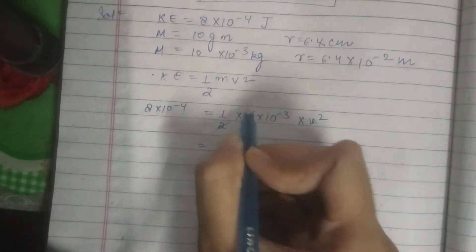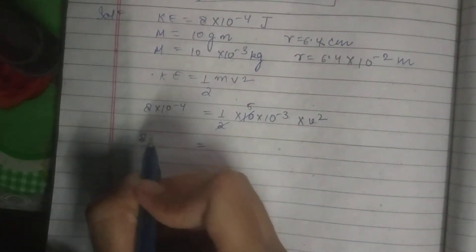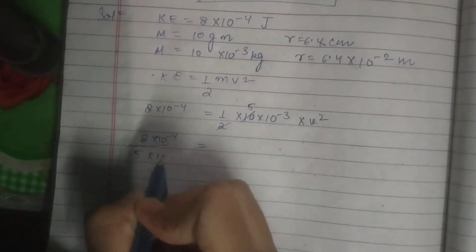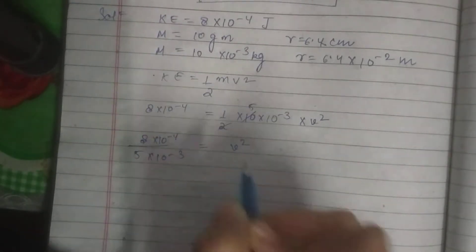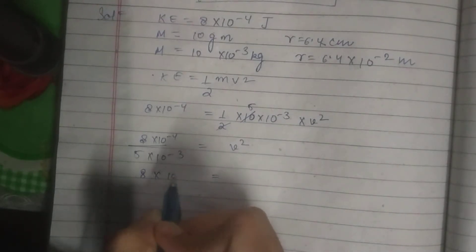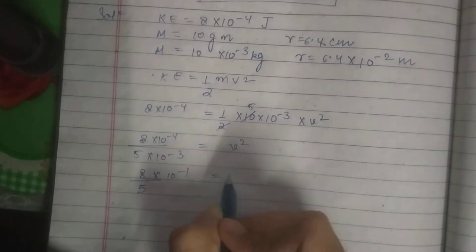So we know 2 fives are 10. 8 into 10 to the power minus 4 by 5 into 10 to the power minus 3 is equal to v square. Now 8 into 10 to the power minus 5 is equal to v square.